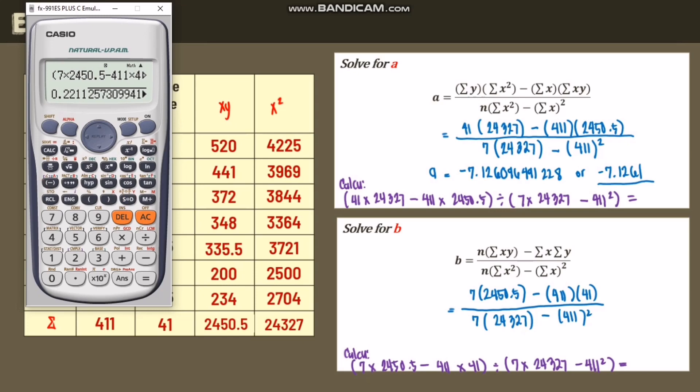So let's see, the answer is equal to, we have b equals 0.2211. Get the 4 decimal places, 0.2211. So this is our b.